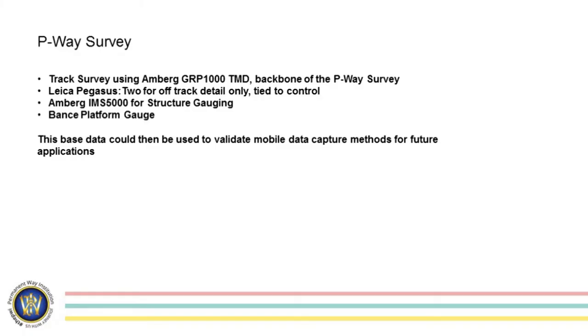The headaches often come from a lack of understanding of scale factor, different projections, and what the errors are. It's not worth the hassle, trust me. The baseline P-way survey: we did normal network specification survey, Amberg 1000 TMD stop-and-go — that's the track alignment, that was the backbone, and that's what we compared all of our mobile data capture techniques to. We used the Leica Pegasus 2 as our mobile mapper for off-track detail only, but tied it down to the survey control so it's all on the survey grid — survey grade data — but very efficient. We used an Amberg IMS 5000 system for structure gauging, and platform gauging as well. That's our staple survey, that's the backbone, that's what we compare everything to. It gave us something reliable, known and quantifiable.